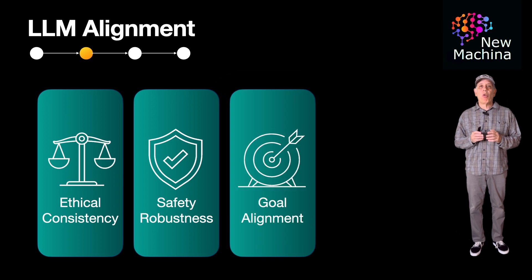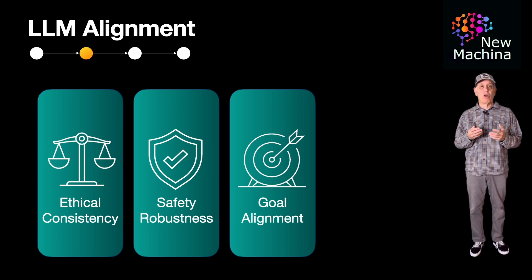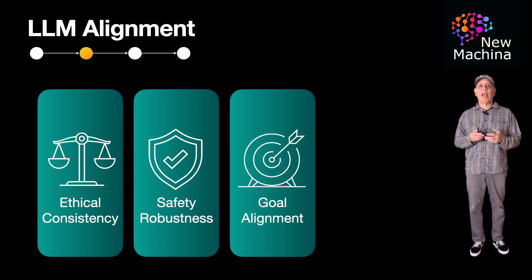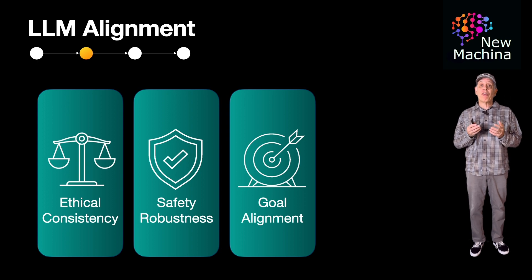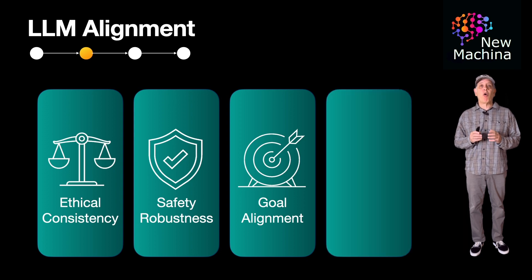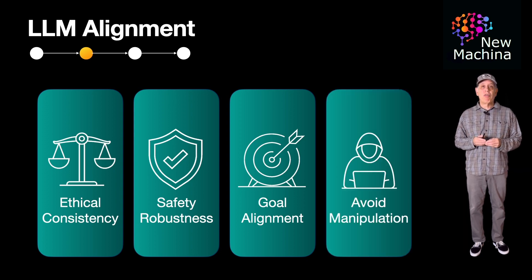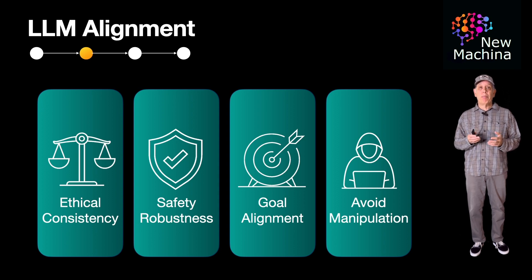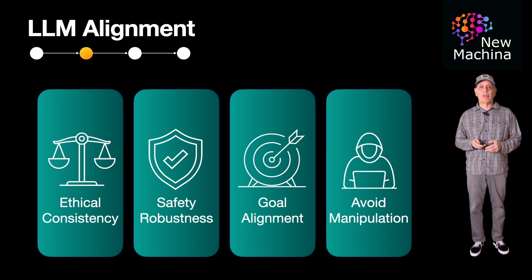The third is goal-oriented behavior. This involves aligning the LLM's behavior with specific user or task-related goals. For example, in a customer service chatbot, alignment would involve training the LLM to be helpful and polite while solving the customer issue effectively. The fourth is avoiding manipulation — ensuring that the LLM is not easily manipulated by user inputs, which could trigger it into producing unintended or harmful responses.